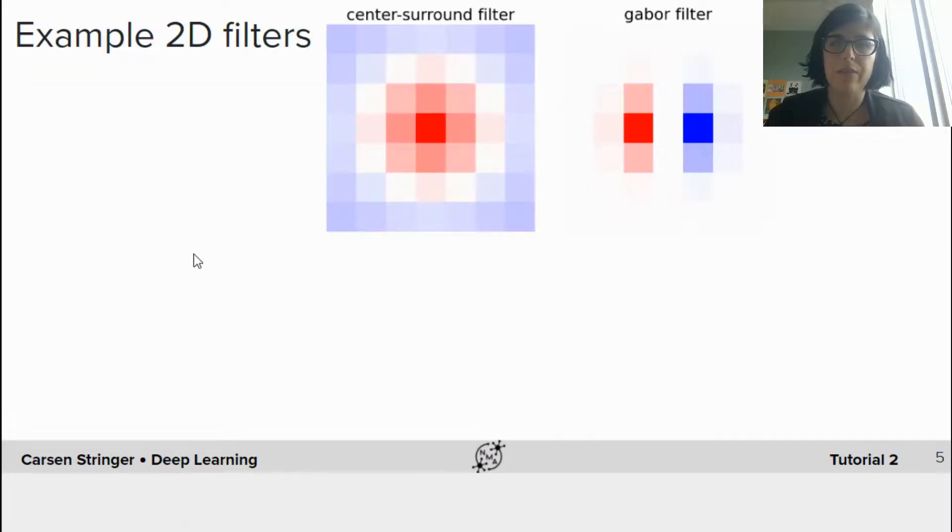And so what are some example filters we might use? So in this tutorial, we're going to use center surround filters. These are going to be, it could be positive in the middle and negative in the surround or the opposite. And we'll also use Gabor filters, which have a positive section next to the negative section, and this can be rotated.